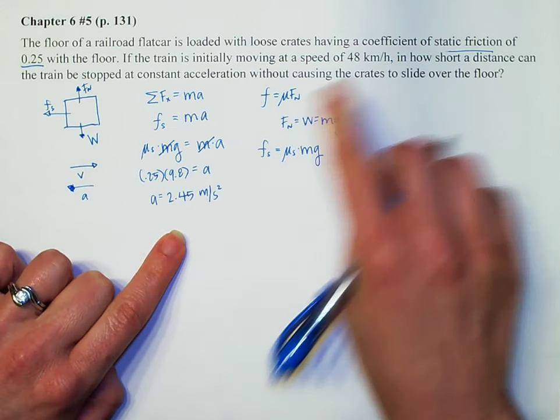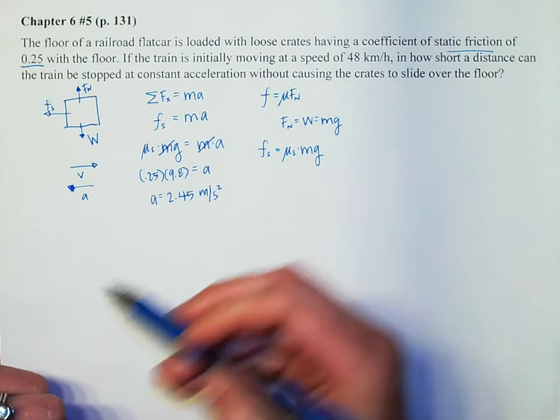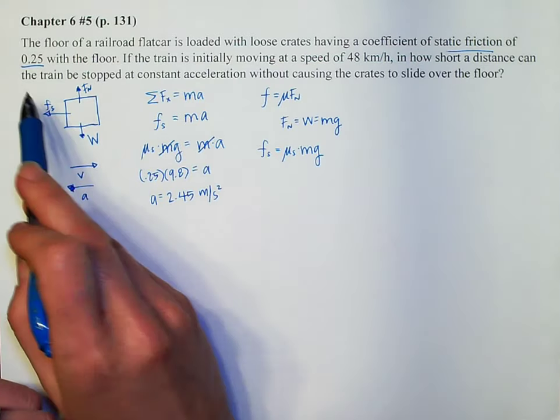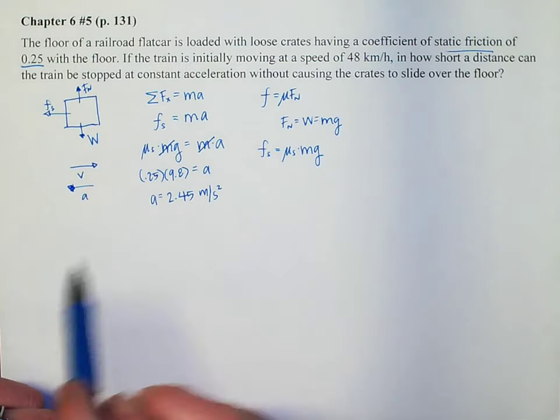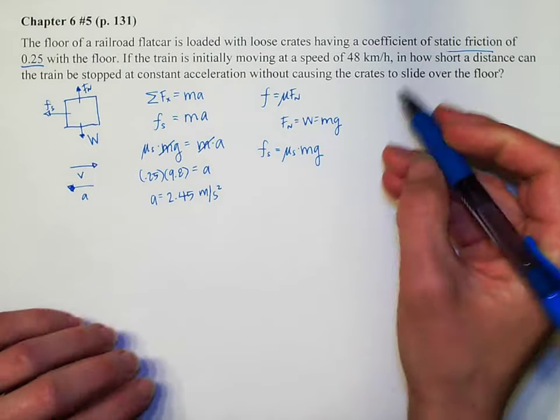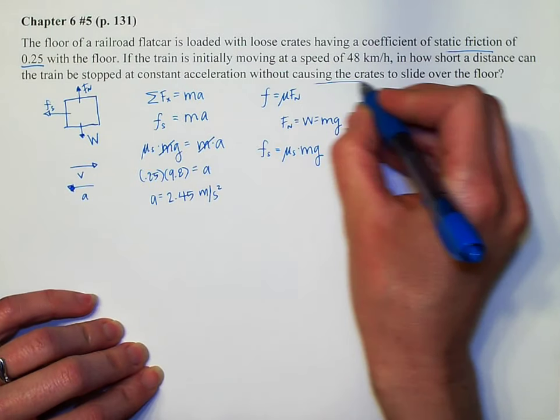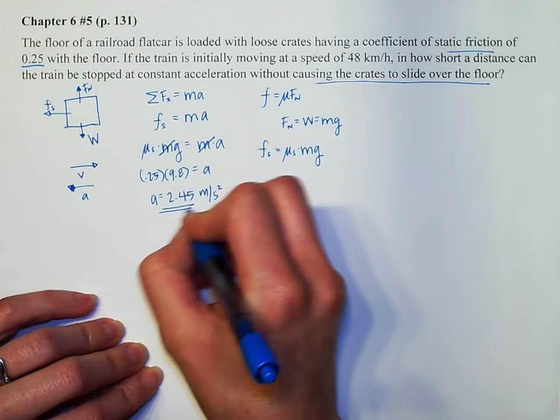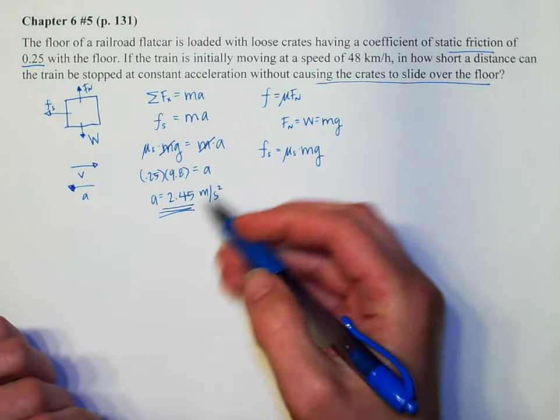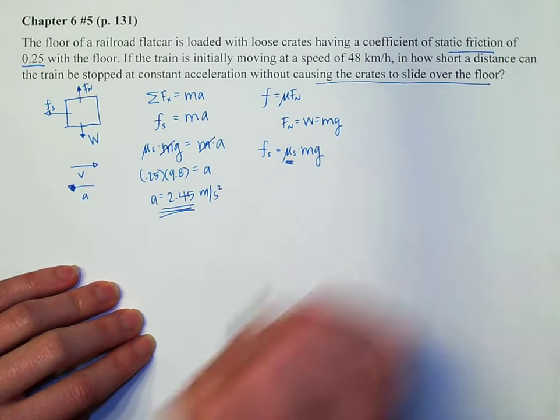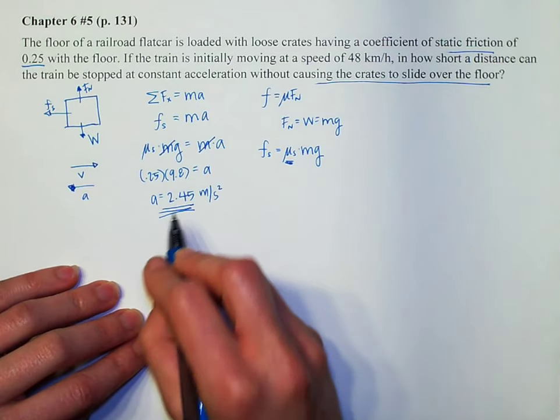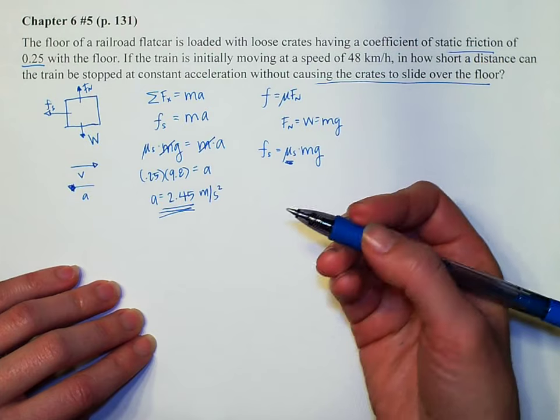Now that would be awesome if the question said, hey, what's your acceleration? But it doesn't. It says how short a distance can the train be stopped at constant acceleration without causing the crates to slide? So we already dealt with the fact that we are not causing the crates to slide. This is the acceleration that's possible to cause no crates to slide because we were using our coefficient of static friction. So this is the most the acceleration can be with no sliding.